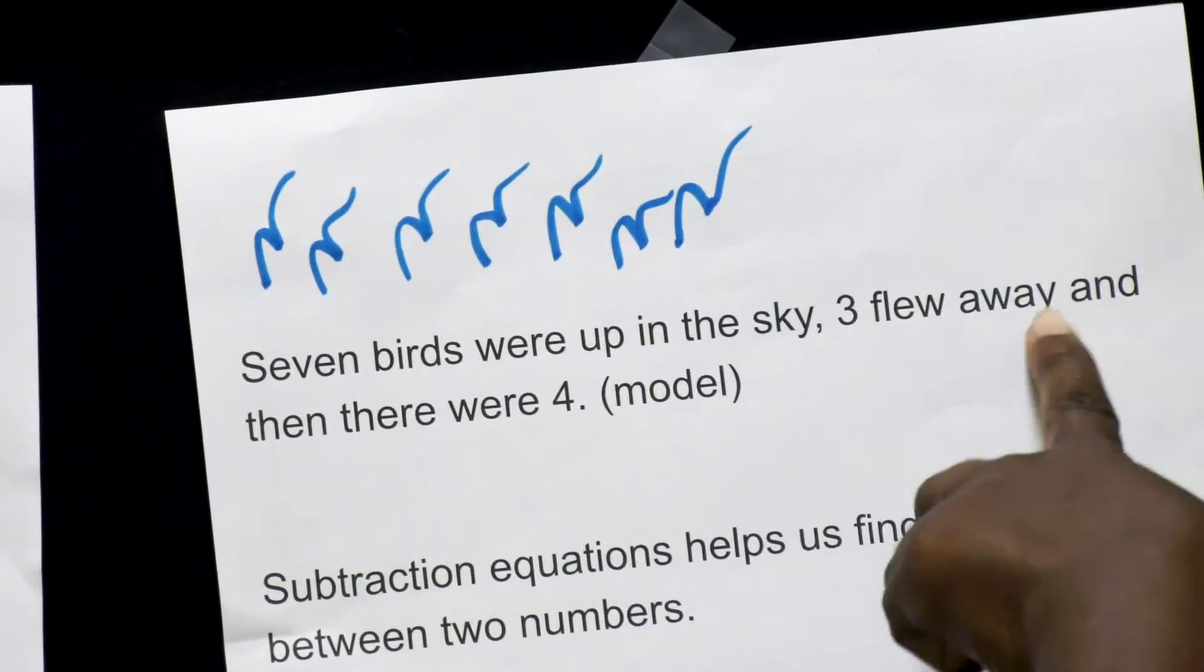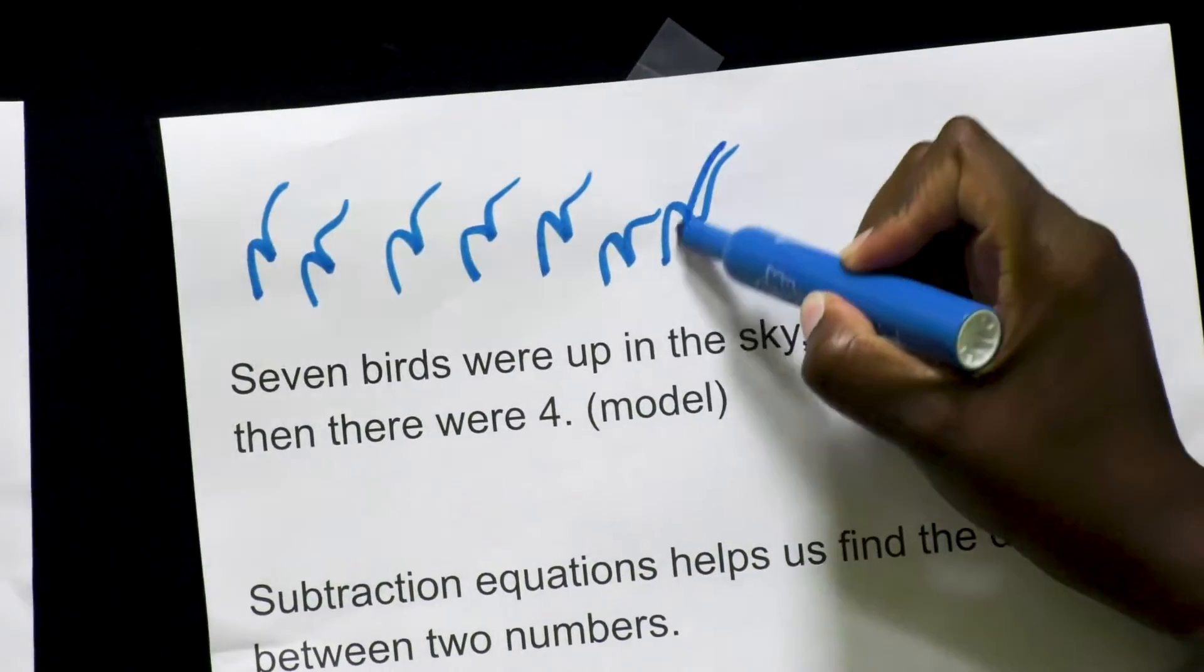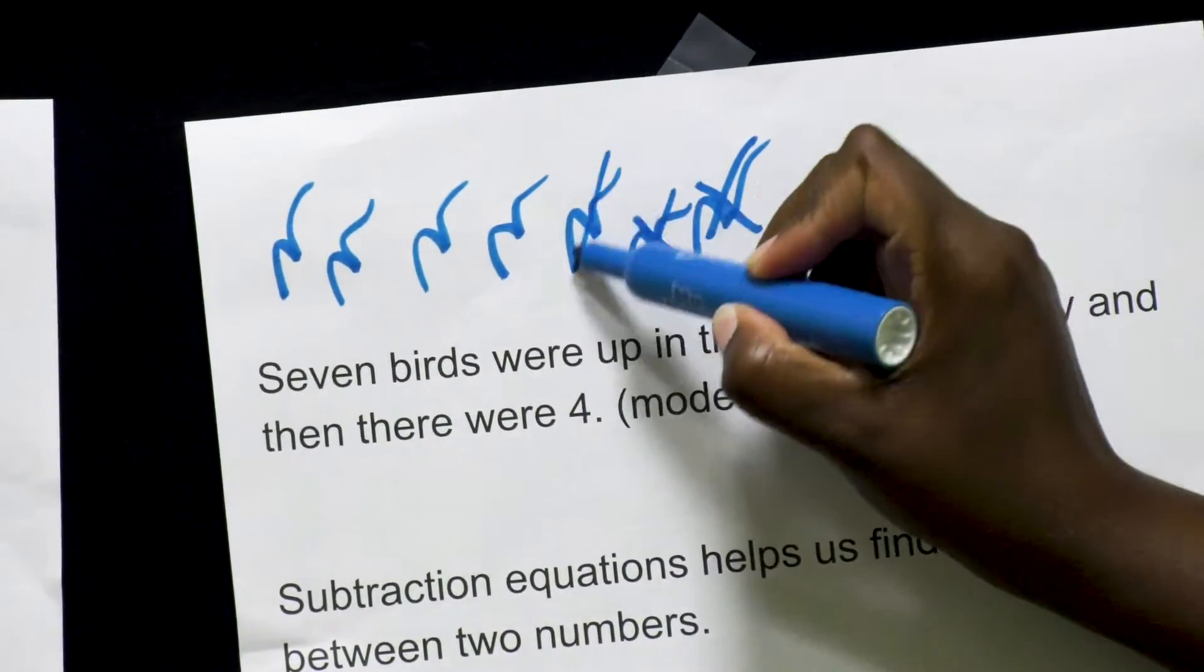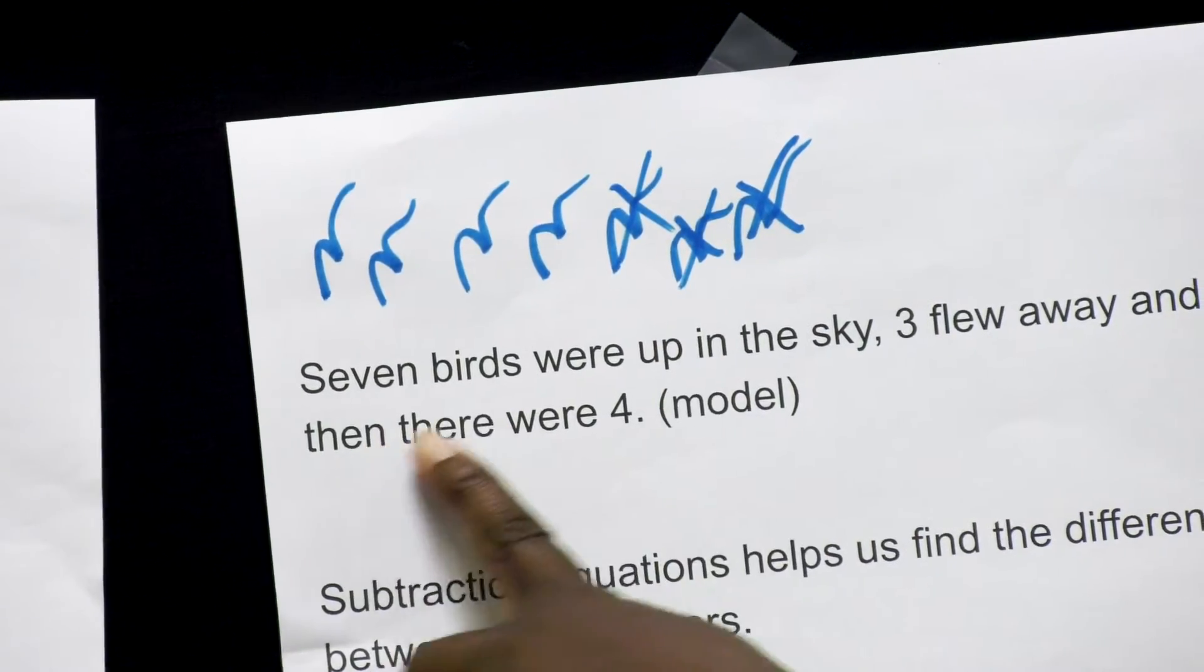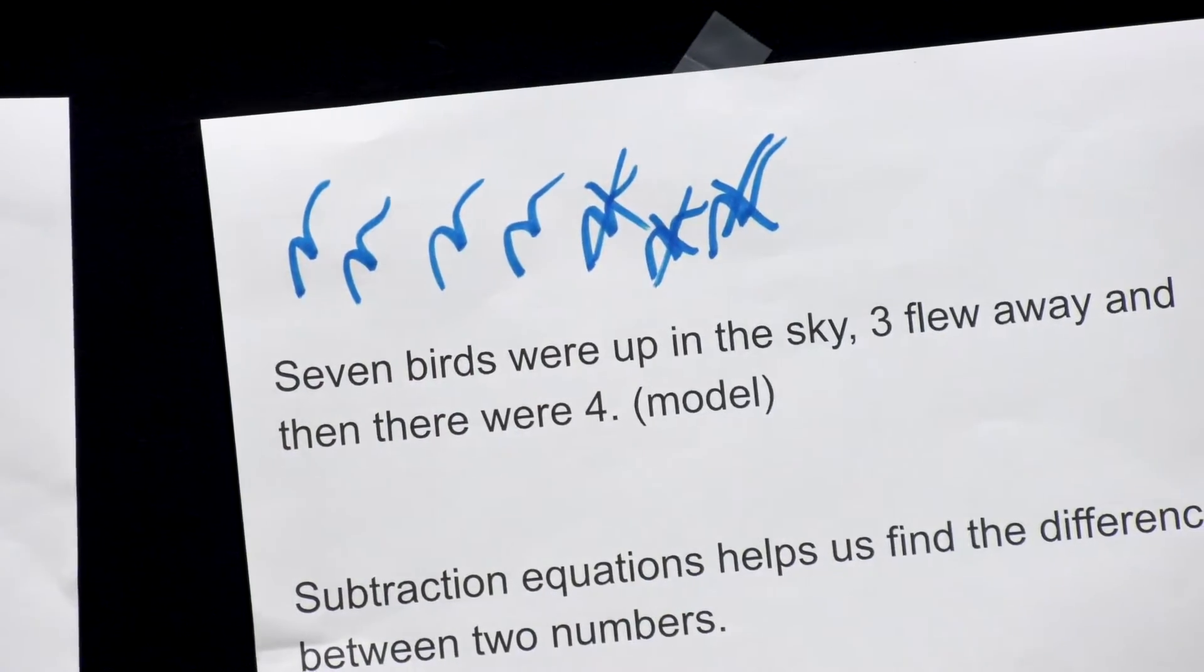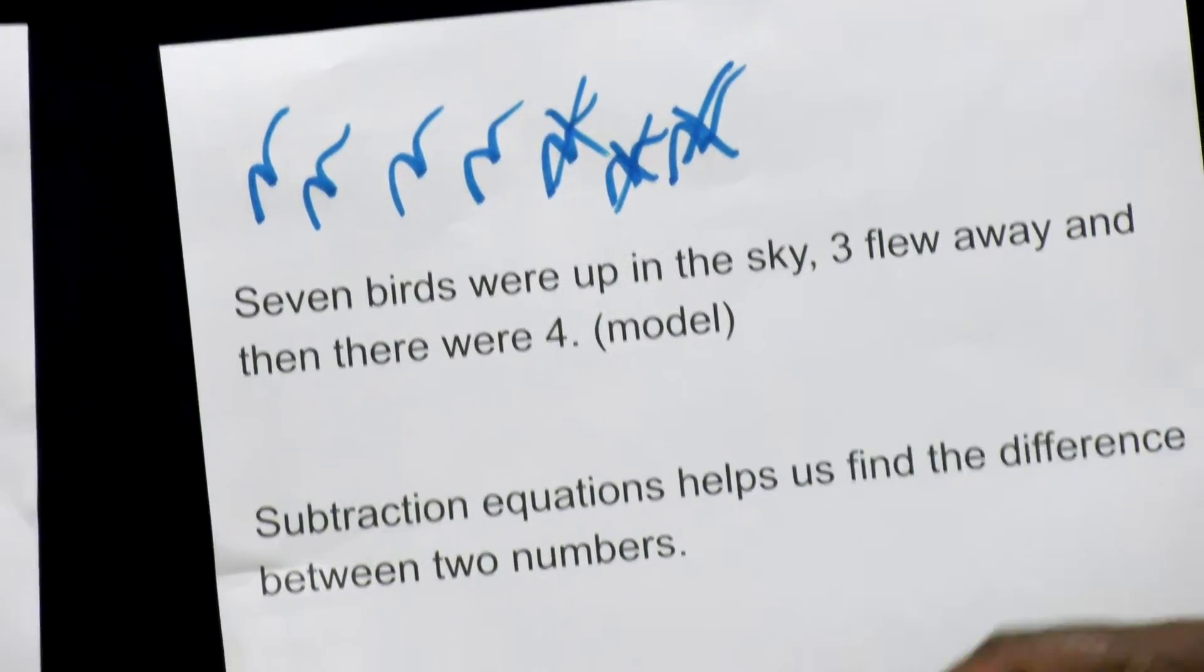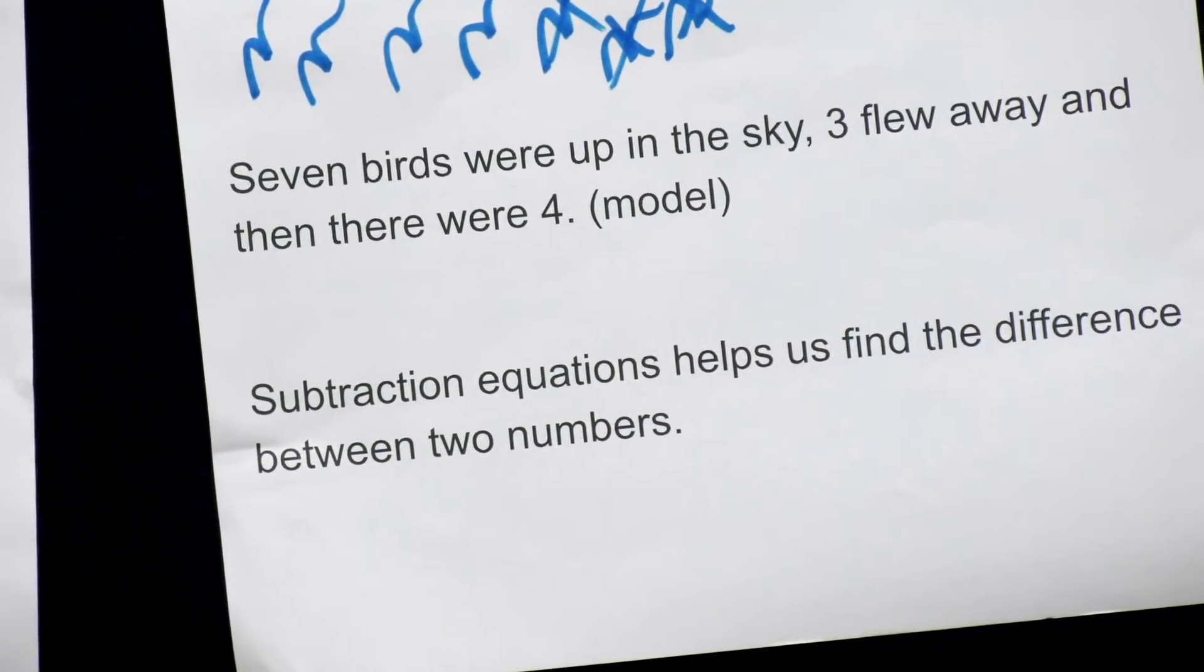So it says three flew away. So you would cross out one, two, three. And then there were one, two, three, four. So that would represent the model to that word problem.